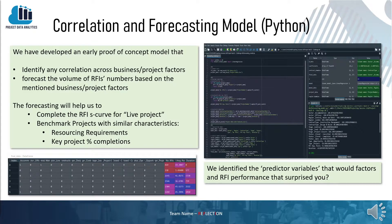One of the ways we've gone about achieving this vision was by building a correlation forecasting model within Python. The idea is that you would enter certain business or project factors, which would then give you a trajectory of where you should see your RFIs hitting your project on its relevant timescale. This would allow you to complete a benchmarking exercise to understand if you're ahead or behind the curve. It's an early proof of concept model that at the moment requires more data to validate its viability.